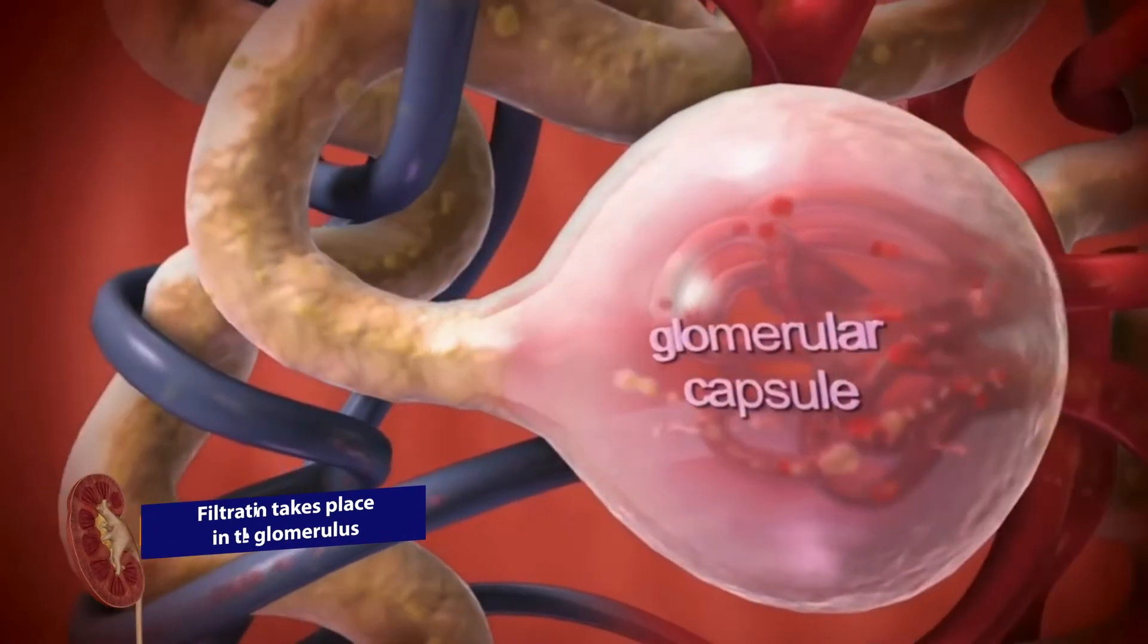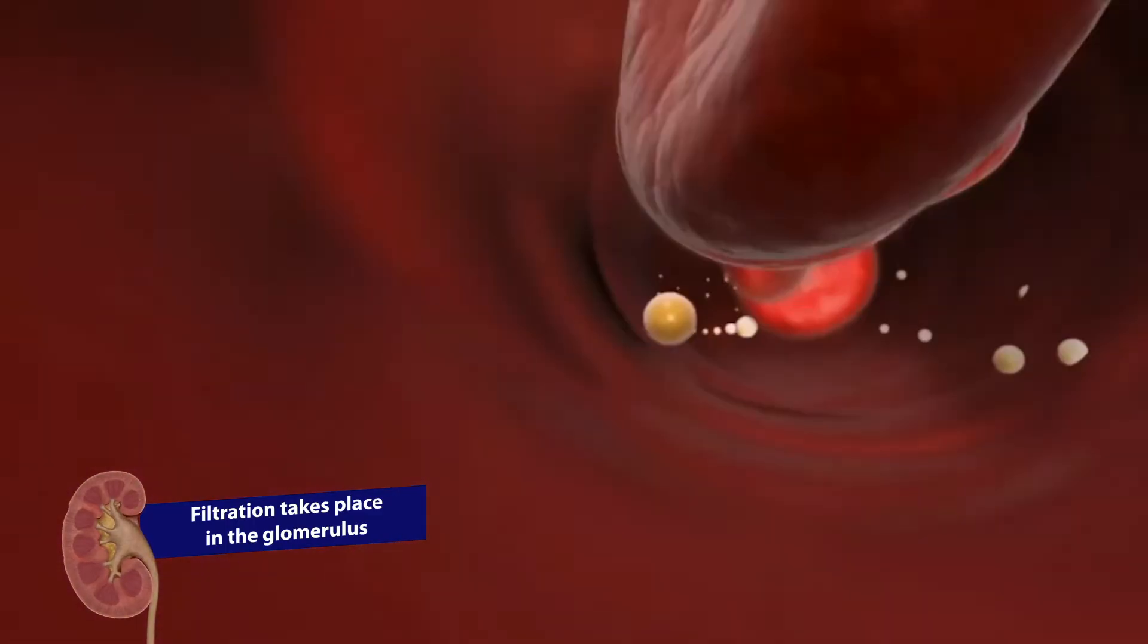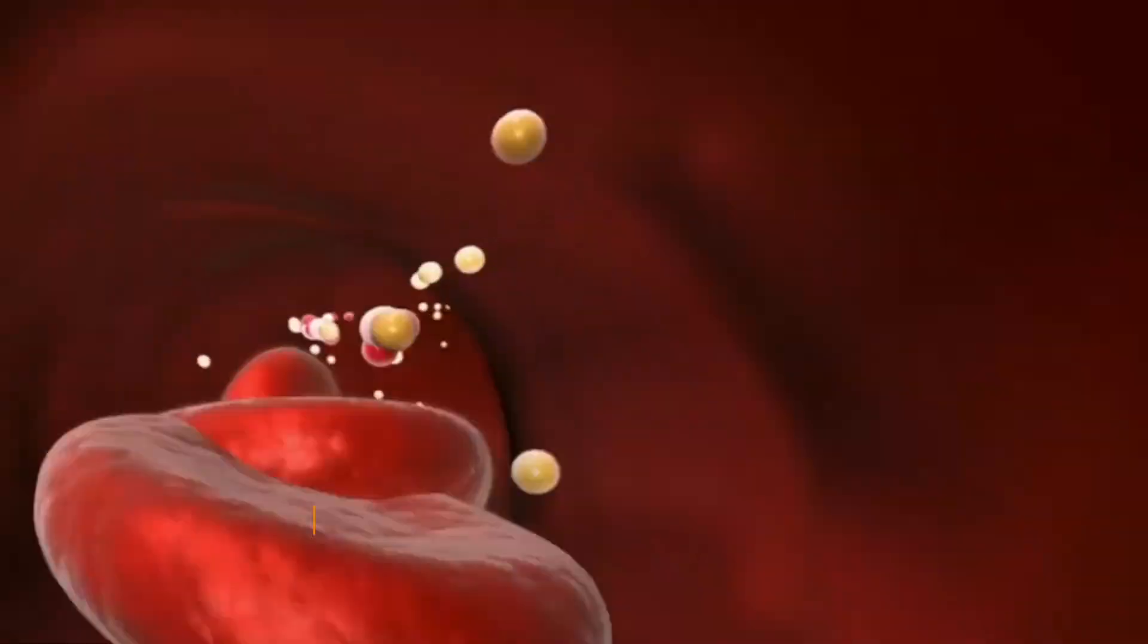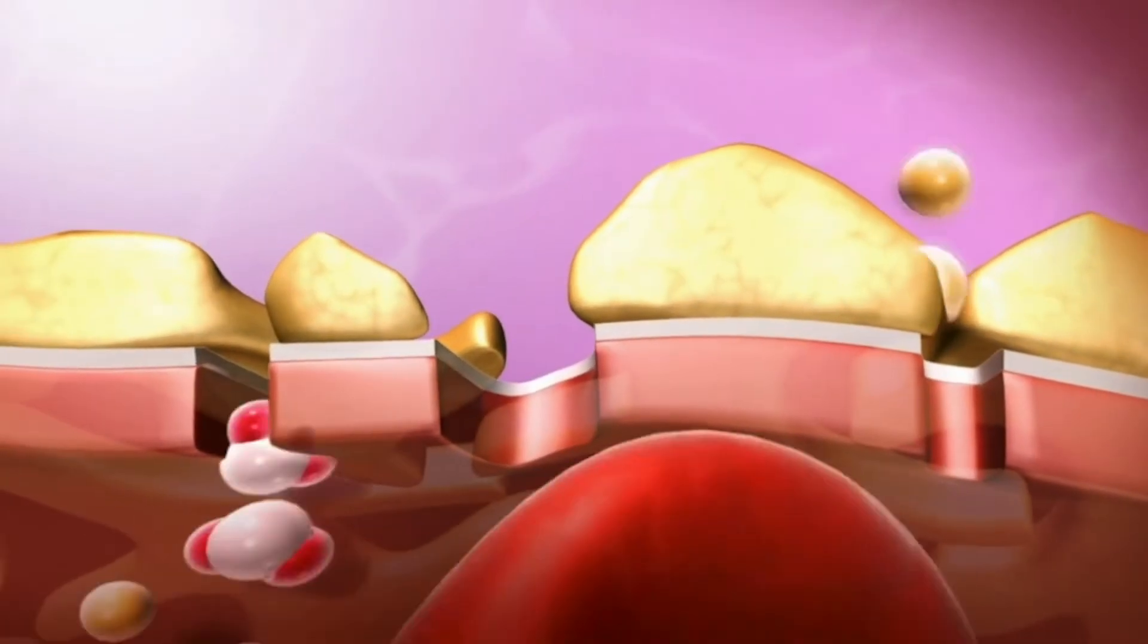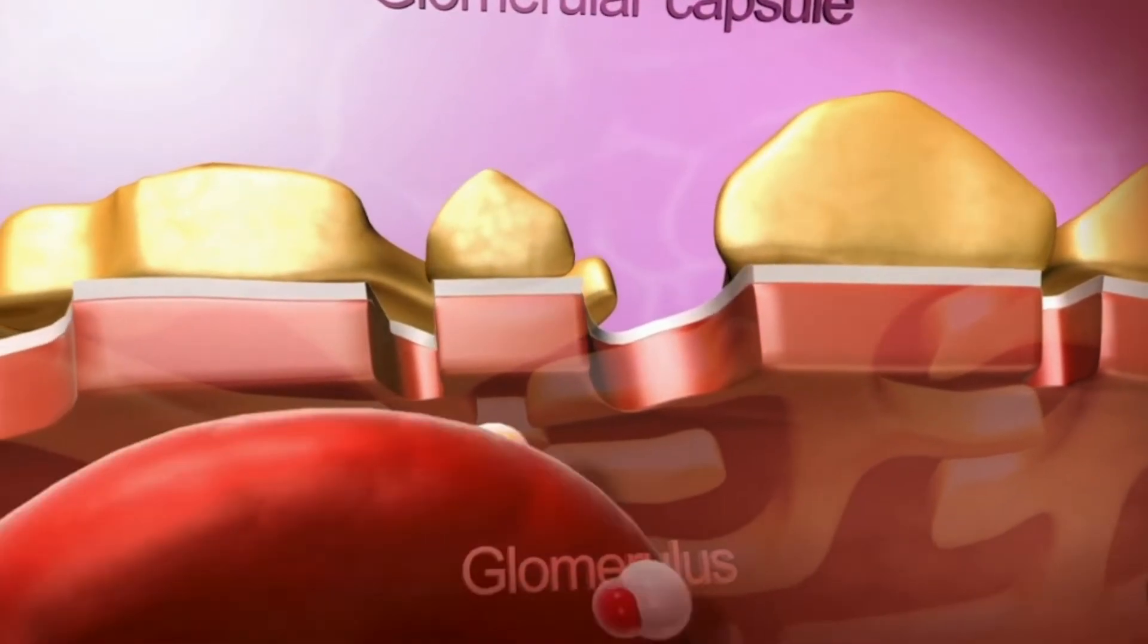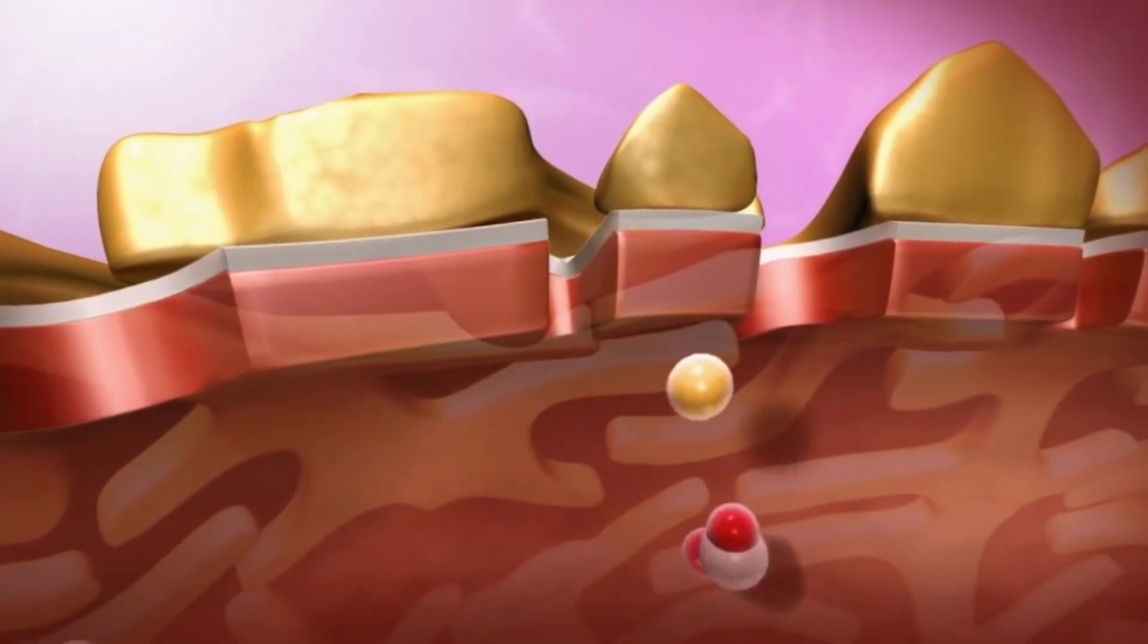The glomerulus is where filtration, the first step of urine formation, takes place. As blood travels through the glomerulus, waste and water pass into the glomerular capsule, forming filtrate, while blood cells and proteins remain in the blood vessels.